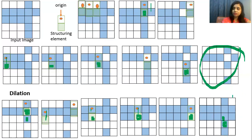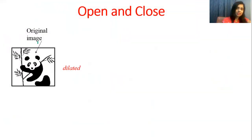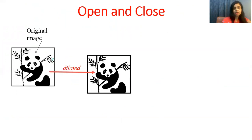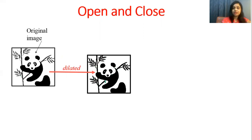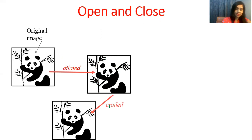Let's see what happens with closing operation. Starting from the original image, first we do dilation. In dilation it adds the pixels, so the gaps are filled because dilation adds pixels at the boundaries. After dilation we do erosion. We get this image, and this is the output of the closing operation.